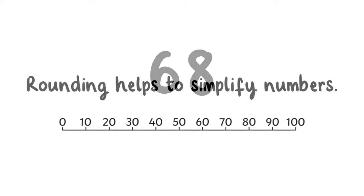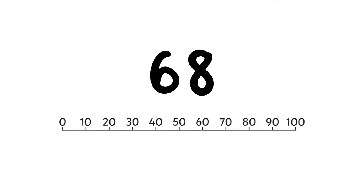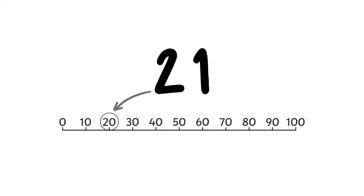For example, if you were to round 68 to the nearest tenth, you would get 70. Or, if you were to round 21 to the nearest tenth, you would get 20.